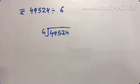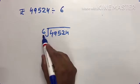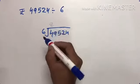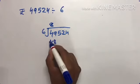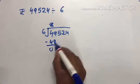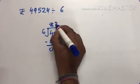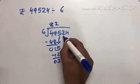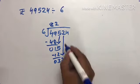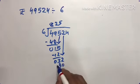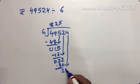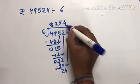49,524 divided by 6. We cannot take 4, so take 49. 6 times 8 is 48. 49 minus 48 is 1. Bring down 5, we have 15. 6 times 2 is 12. 15 minus 12 is 3. Bring down 2, we have 32. 6 times 5 is 30. 32 minus 30 is 2. Bring down 4, we have 24. 6 times 4 is 24. 24 minus 24 is 0.